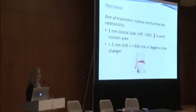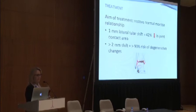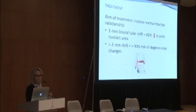In terms of treatment, the aim is to restore the normal mortise. Even a 1mm talar shift causes a 42% reduction in the joint contact area, which leads to the risk of degeneration. And if there's more than a 2mm shift, there's more than 90% risk of degenerative changes and osteoarthritis later. So it's really important to ensure anatomical restoration.